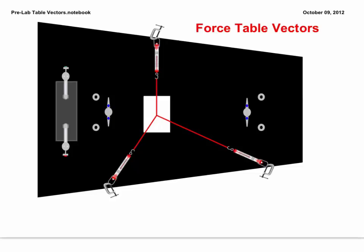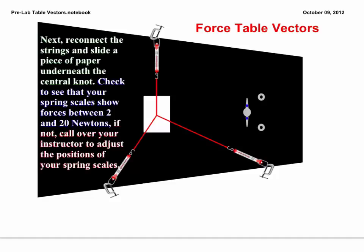Hey this is Mr. Hendrickson and this is your force table vectors pre-lab. You're gonna start by first connecting all three strings to the corresponding color spring scale on each side of the table.